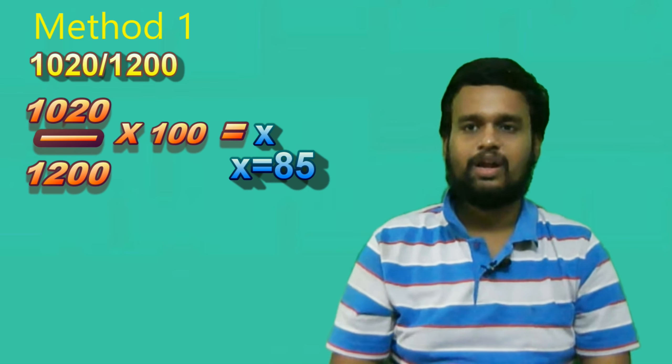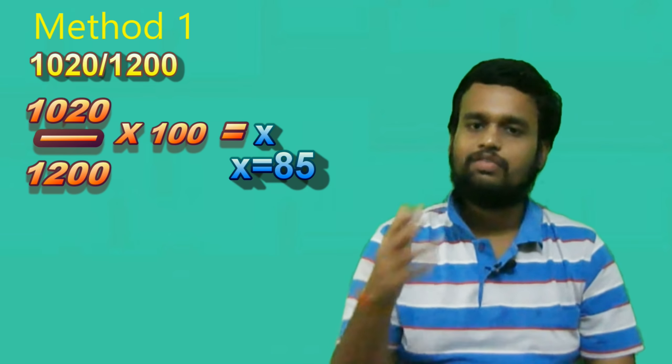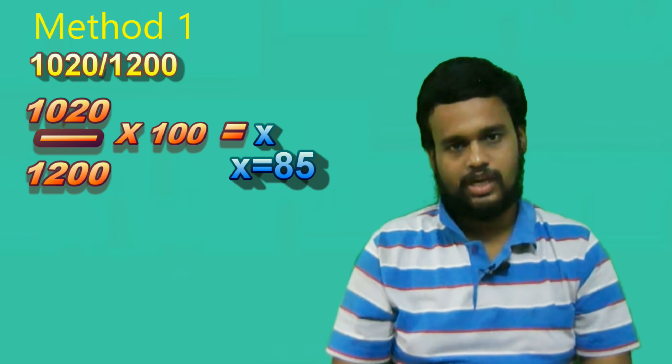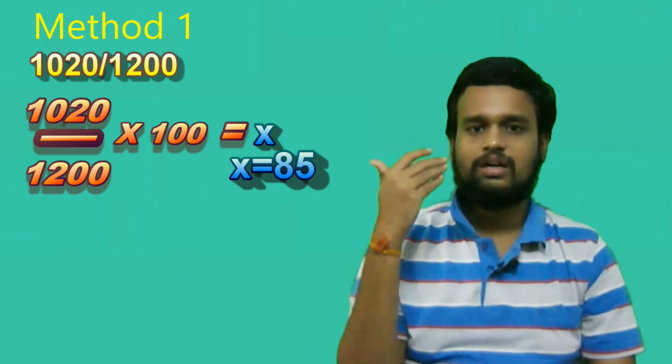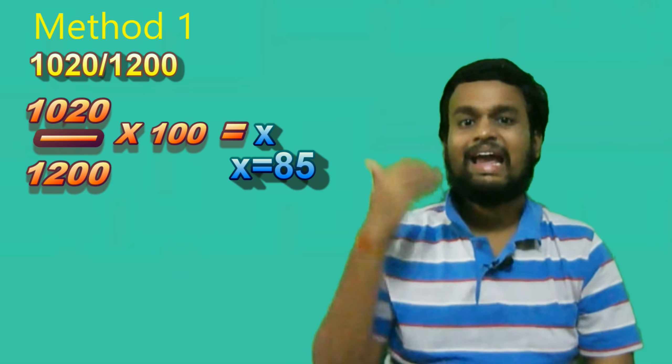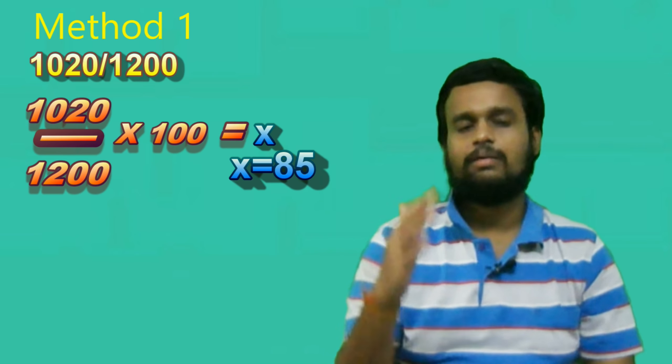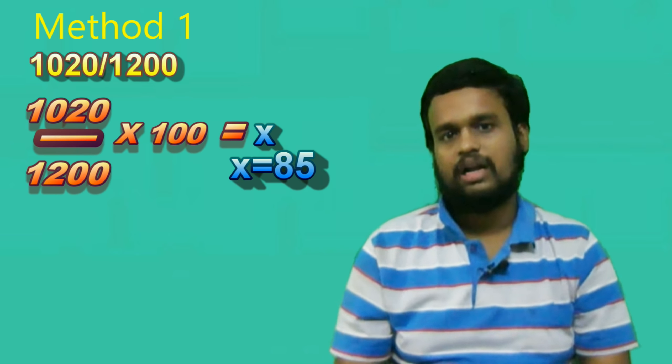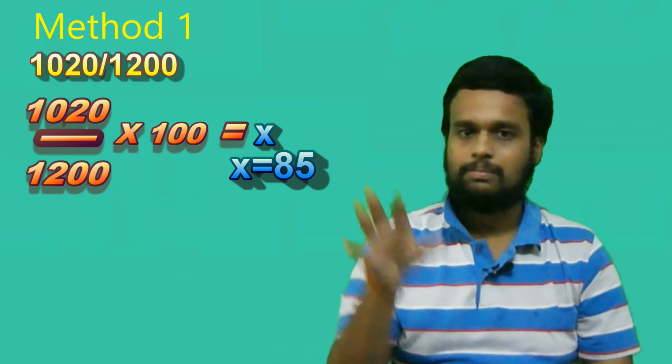So 1020 divided by 1200 times 100 gives us 85. That is the percentage - 85% of 1200. This is how you do this method.